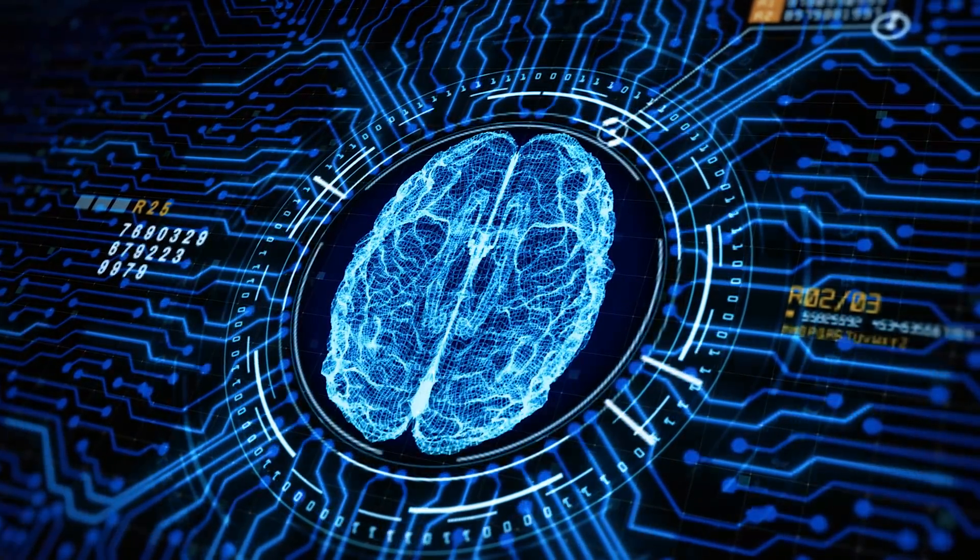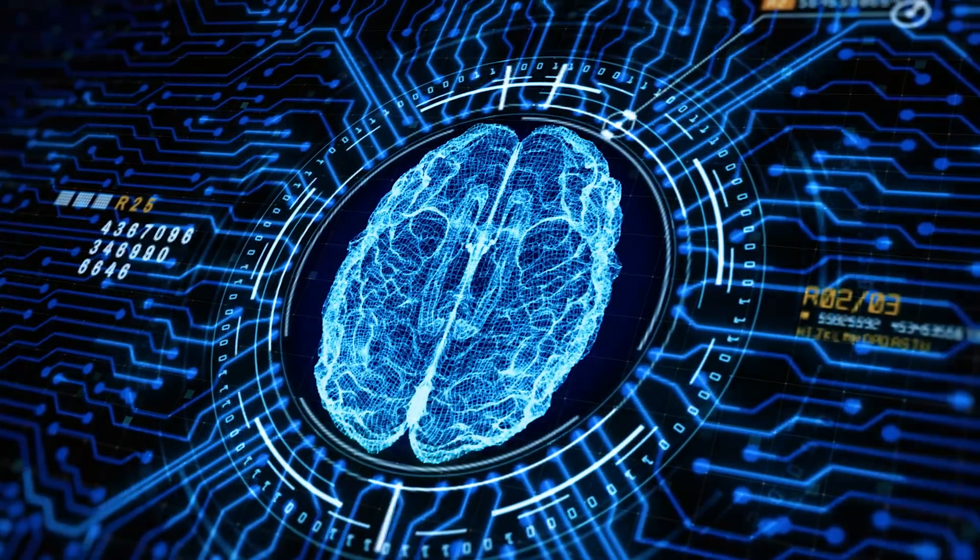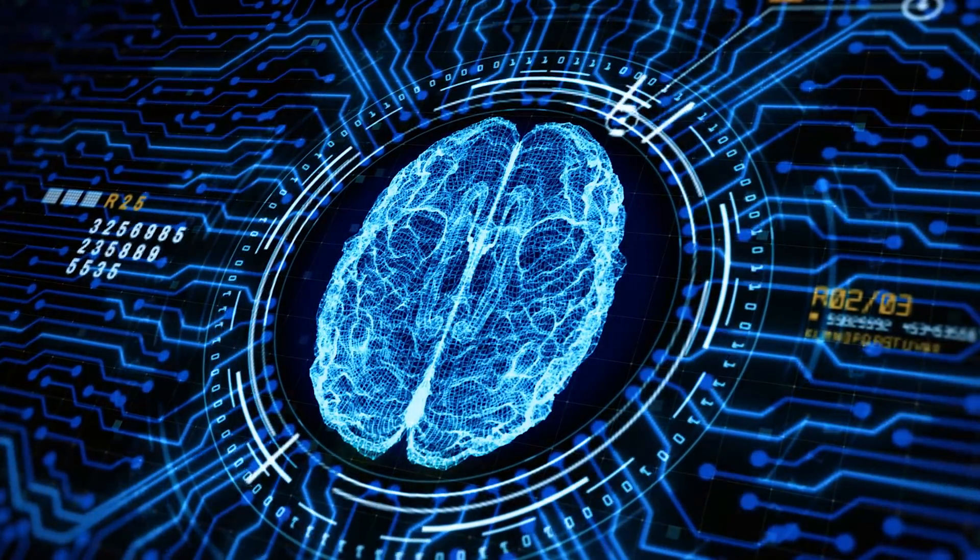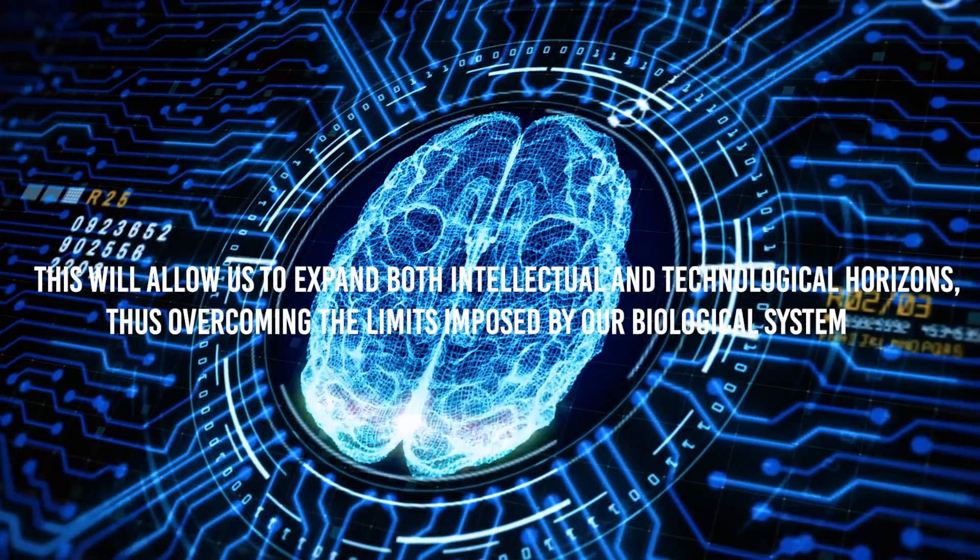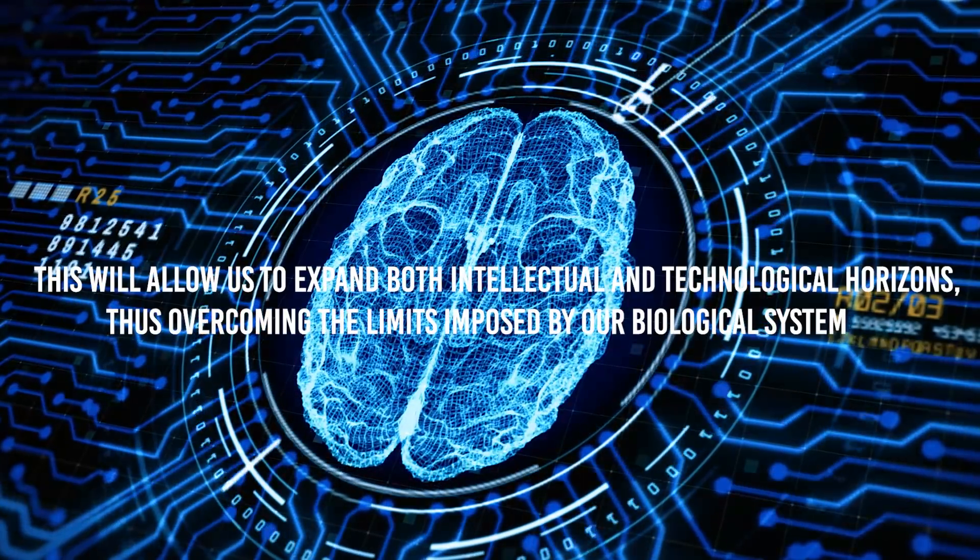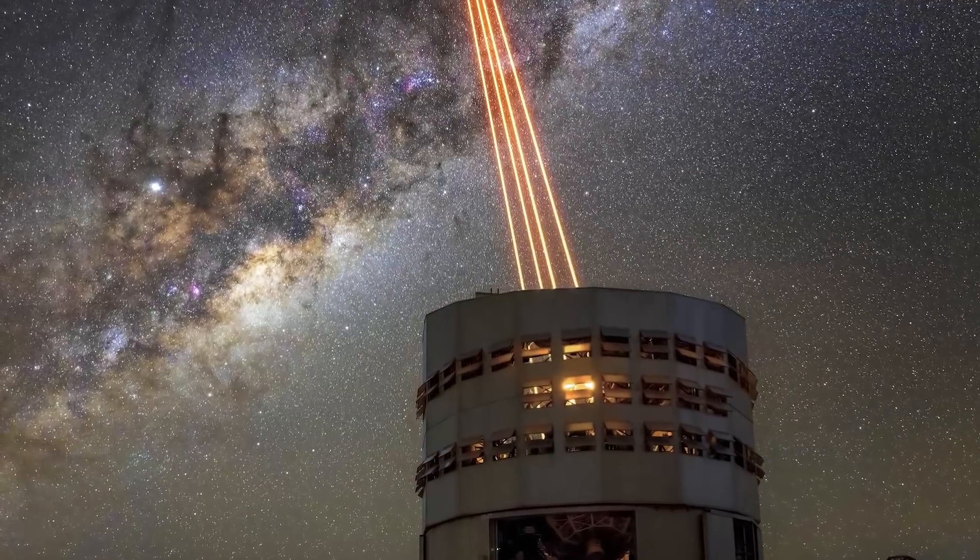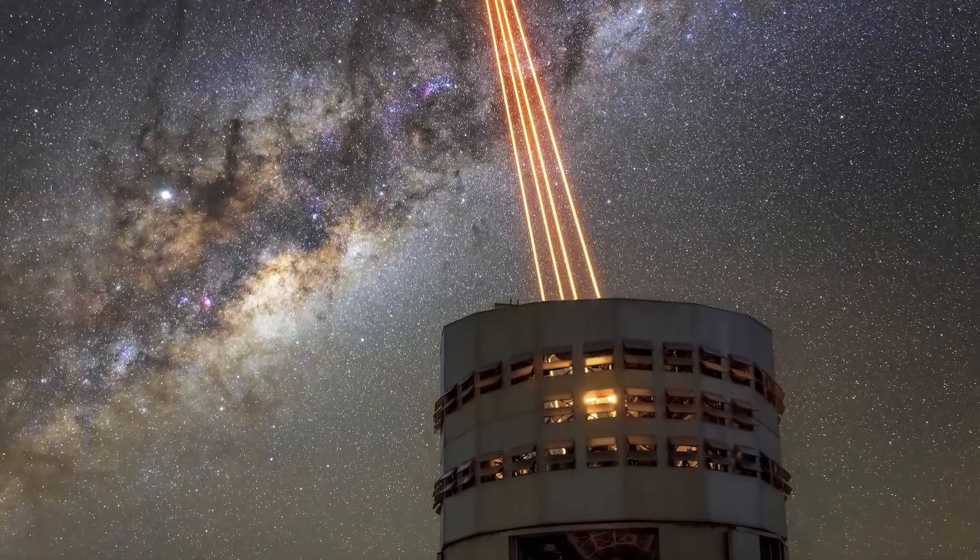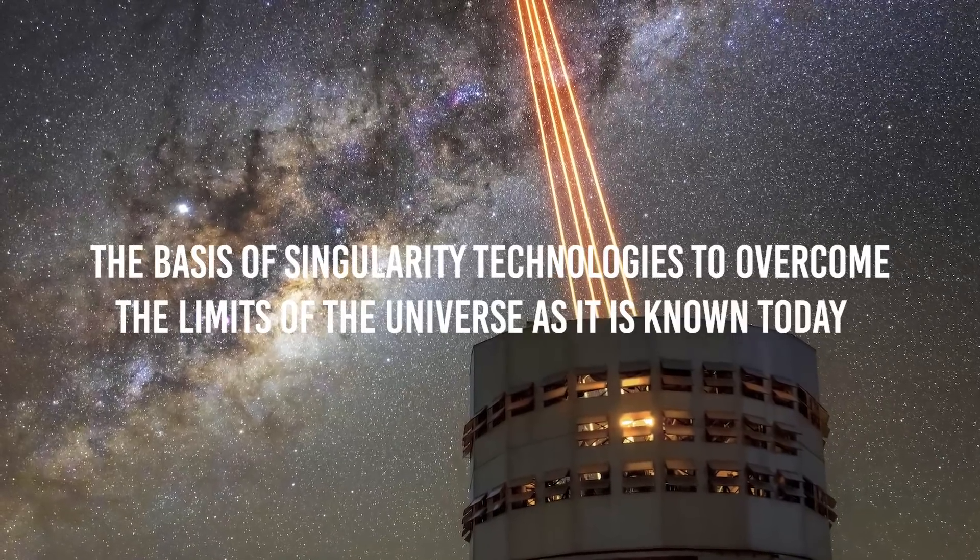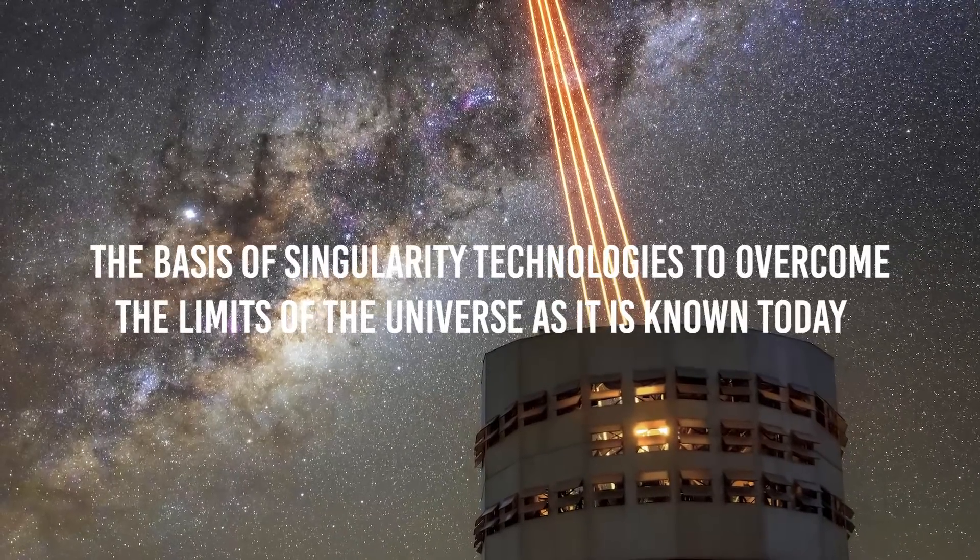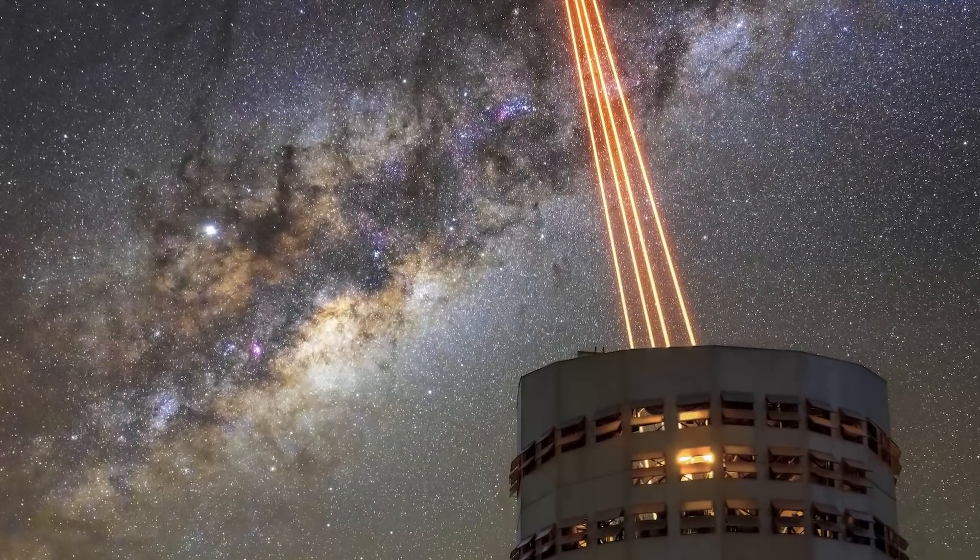The fifth epoch should be oriented from today to a near future, and within it we would have the so-called fusion between human intellect and technology—the definitive union of man-machine, the technological singularity. This will allow us to expand both intellectual and technological horizons, overcoming the limits imposed by our biological system. Finally, the sixth epoch foresees a future evolution that will allow technologies to overcome the limits of the universe as it is known today. We will be able to transform the entire universe into a complex, intelligent system.